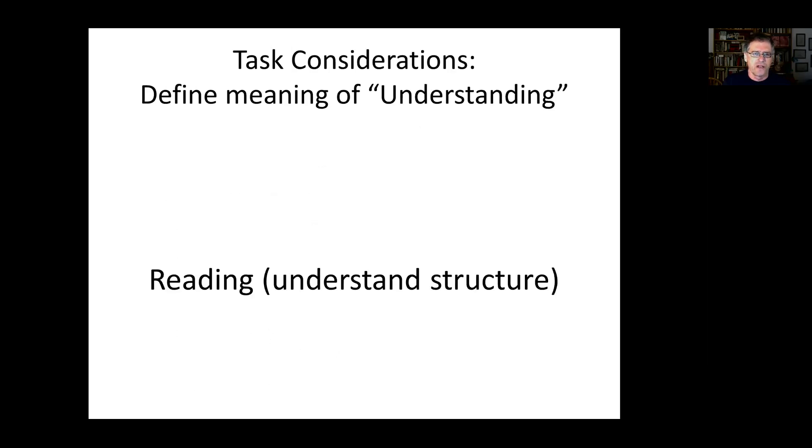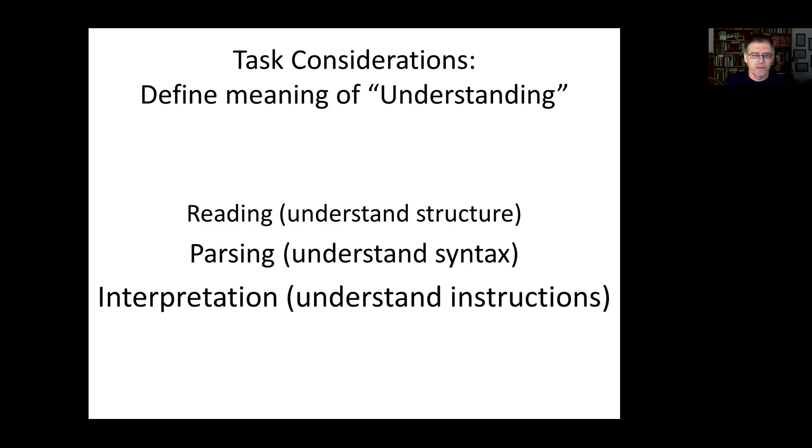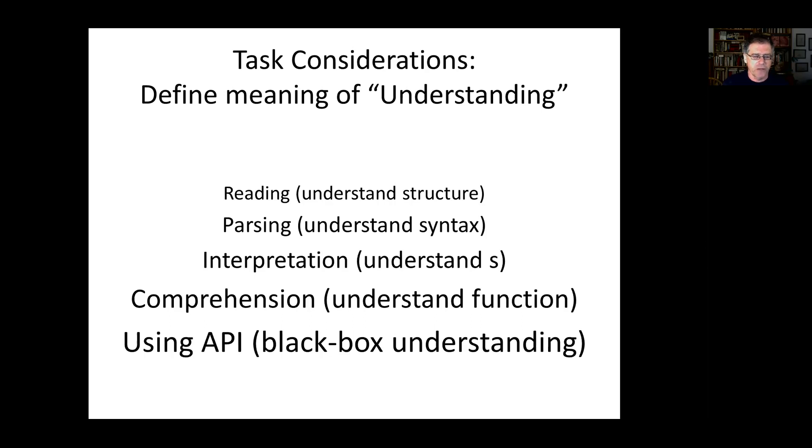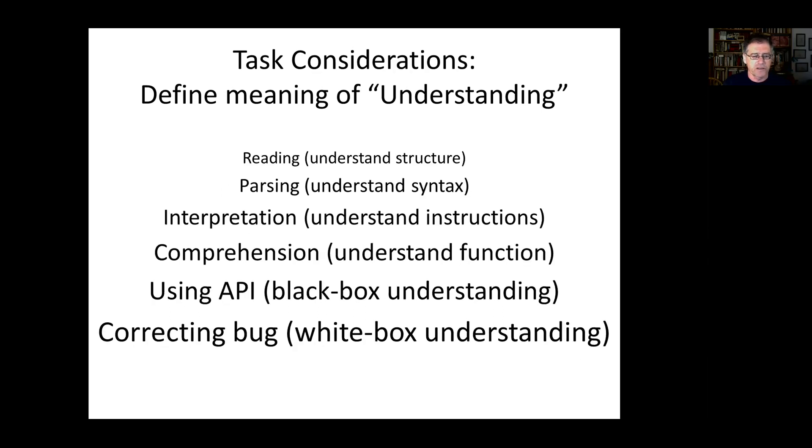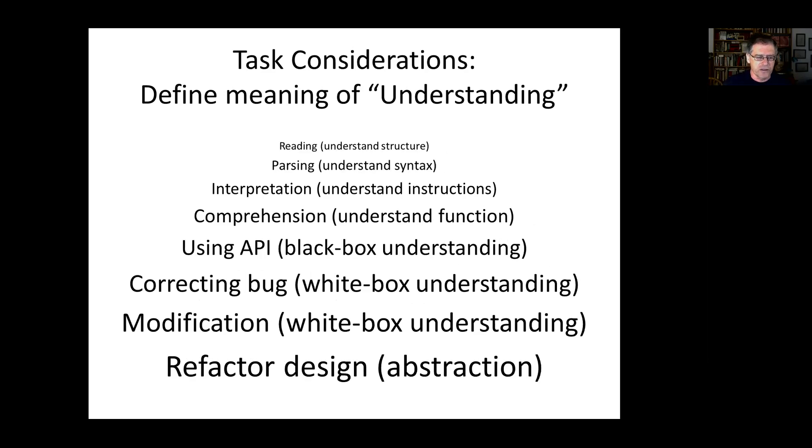Going on to the task. The main consideration regarding the task is which task to use because the task actually defines what you mean when you talk about understanding the code. The simplest possible task is just to read the code and understand its structure. The next level is to parse the code and understand the syntax. Higher up is interpretation task. This means that you understand the instructions and you can follow what the code does, for example, in order to figure out what it prints in the end. Real comprehension is to understand the functionality of the code. An example of this sort of task is to give a name to a function. Higher up is using an API, which implies black box understanding, or correcting a bug, which implies white box understanding, or modification of the code, which implies even a higher level of white box understanding. At the very top, there's refactoring the design, which implies the understanding of the abstraction embodied in the code.